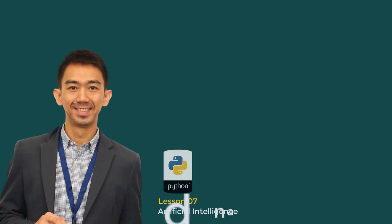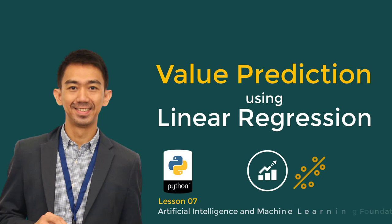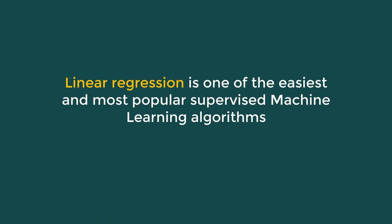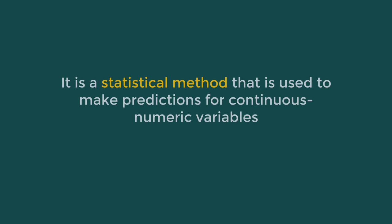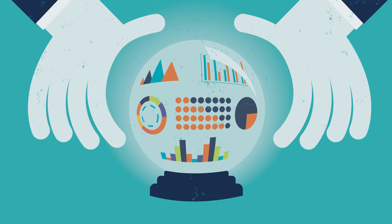Hi again and welcome to Lesson 7 of Artificial Intelligence and Machine Learning Foundations course. For today's lesson, you will learn how to build your first machine learning model using linear regression. Linear regression is one of the easiest and most popular supervised machine learning algorithms. It is a statistical method used to make predictions for continuous numeric variables like sales, salary, age, price, scores, and so on.